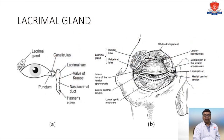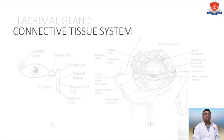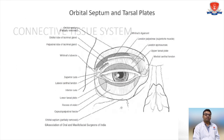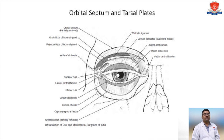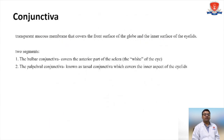The lacrimal gland is also present within the orbit. Connective tissues include the orbital septa and tarsal plates. The conjunctiva is a transparent mucous membrane that covers the frontal surface of the globe and the inner surface of the eyelid. It has two segments: the bulbar conjunctiva covers the anterior part of the sclera — the white of the eye — and the palpebral conjunctiva, also known as tarsal conjunctiva, covers the inner surface of the eyelid.